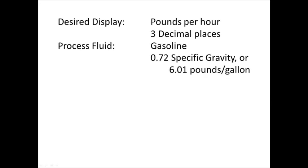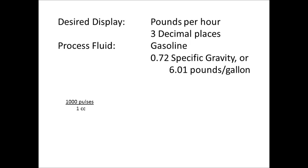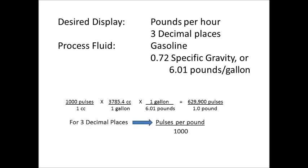The second method of conversion is to use the density of the fuel. We will use the same parameters with 1000 pulses per cc, multiplied by 3785.4 cc's per gallon, and then multiply by one gallon being 6.01 pounds, giving us the same k-factor of 629,900 pulses per pound. And for three decimal places, we come up with a k-factor of 629.9.